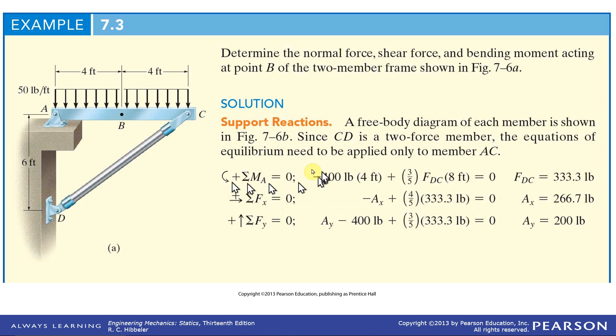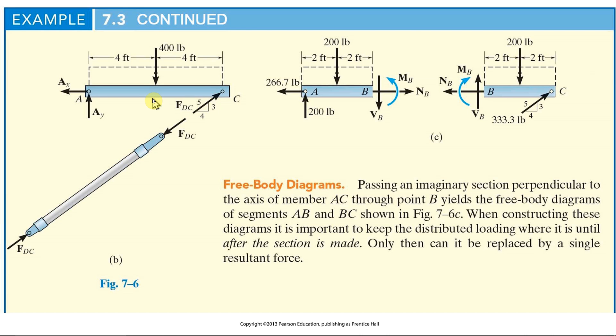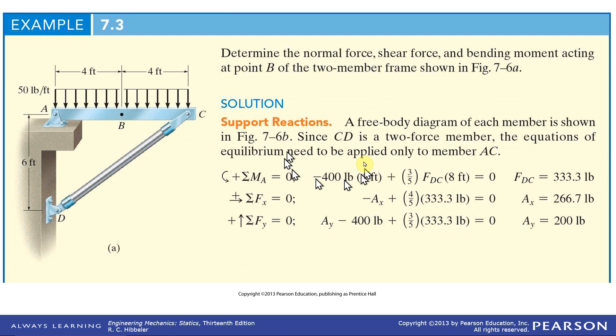And then finally, the moment about A. We can take FDC—excuse me, FDC is going up, it's counterclockwise, it's positive. Negative, it's three-fifths because of the sine of this angle. Lever arm is 8 feet. And 400 pounds, looking at this, 400 pounds downward, clockwise, that'd be negative at 4 feet. So we get the three reaction forces. Okay, you know how to do reaction forces.